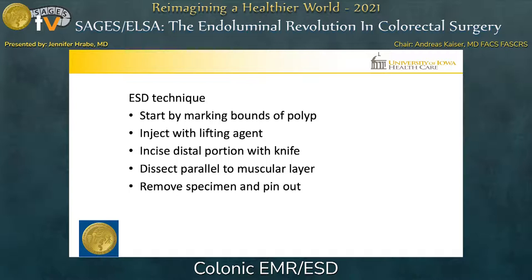Using the endo knife, an incision is made, generally starting on the distal aspect of the polyp. Using that same knife, the dissection plane is entered and proceeds along the submucosa. Once the specimen is completely dissected, it should be retrieved and pinned out for complete pathologic staging.